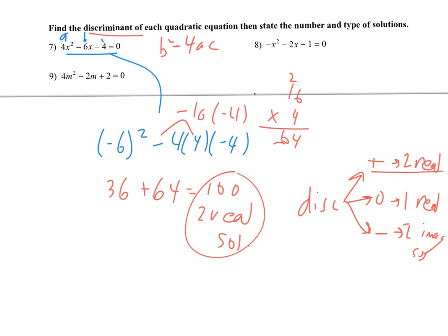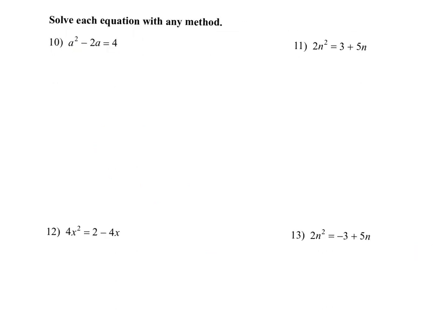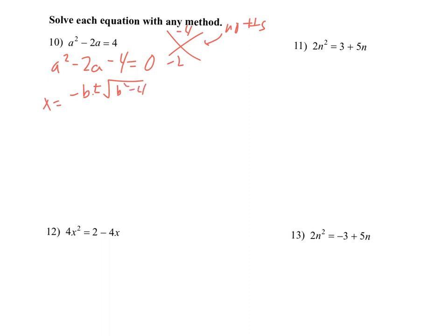Alright, with that, you guys can try 8 and 9. Next up, we're going to solve these with any method — I always try factoring first. For factoring, we need to get one side to 0. Now we're going to think of two numbers that multiply to negative 4 and add to negative 2. However, there are no numbers that work out for that, so that means I just switch over to the quadratic formula: x equals negative b plus or minus the square root of b squared minus 4ac all over 2a.